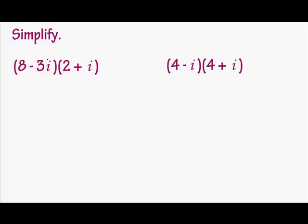We're going to simplify, which means we're going to be multiplying these binomials together. Now even though there's an imaginary number in them, we're still going to use FOIL: first, outside, inside, last. So let's do that.